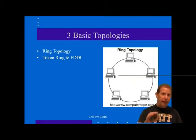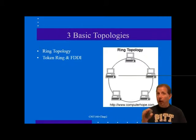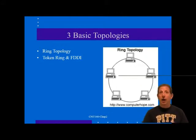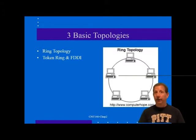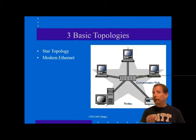Digital signals are typically reconstituted at each device node, and a token scheme is often employed to regulate transmissions and keep a device from hogging available bandwidth. Token Ring and Fiber Distributed Data Interface (FDDI) are examples of ring topologies. Star topology connects each device to a concentration hub at the center of the star, and all communication between devices passes through that hub.